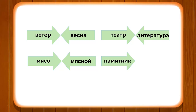Now let's look at: VECHER, VESNA, MYASO, MYASNOE, TEATR, LITERATURA, PAMYATNIK, and SCHYONA. VESNA is spring, MYASO is a noun and MYASNOE is its adjective form. TEATR means theater — you must have heard of the Bolshoi Theatre in Moscow. You will learn about these important buildings in dedicated modules. LITERATURA means literature, PAMYATNIK means monument.